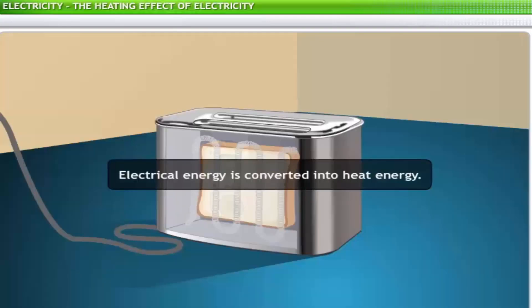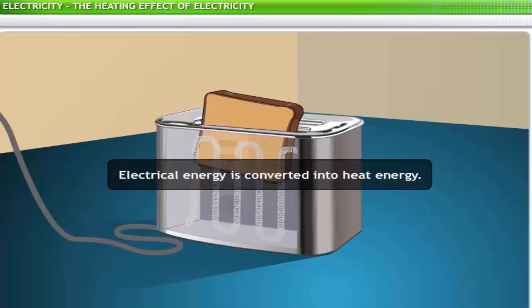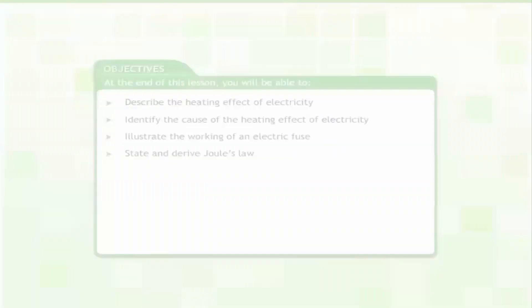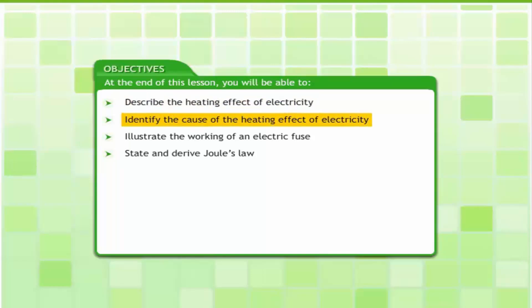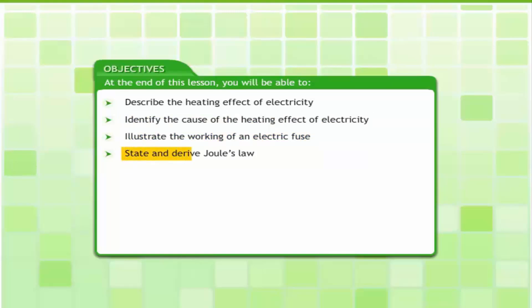Electric appliances convert electricity into heat energy, providing energy in a form you can use. In this lesson, you will learn how electrical energy transforms into heat energy. At the end of this lesson, you will be able to describe the heating effect of electricity, identify its cause, illustrate the working of an electric fuse, and state and derive Joule's law.